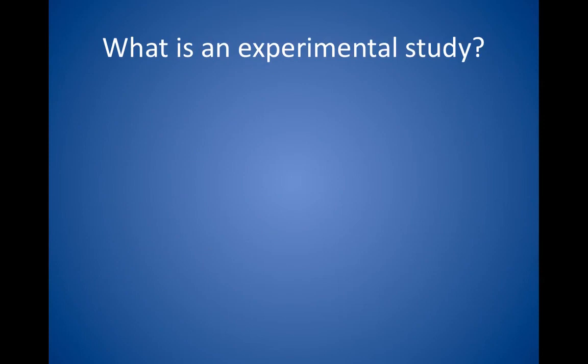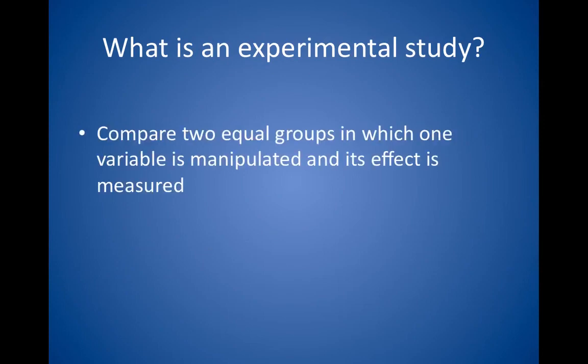What is an experimental study? Experimental studies are the gold standard. They compare two equal groups in which one variable is manipulated and its effect is measured. Experimental studies use double-blinding, or at least single-blinding, and well-matched controls to ensure accurate data. It is not always possible to do experimental studies because of ethical concerns.